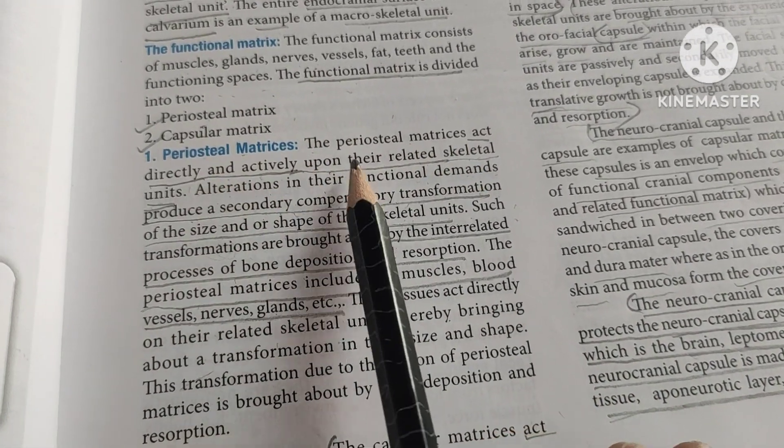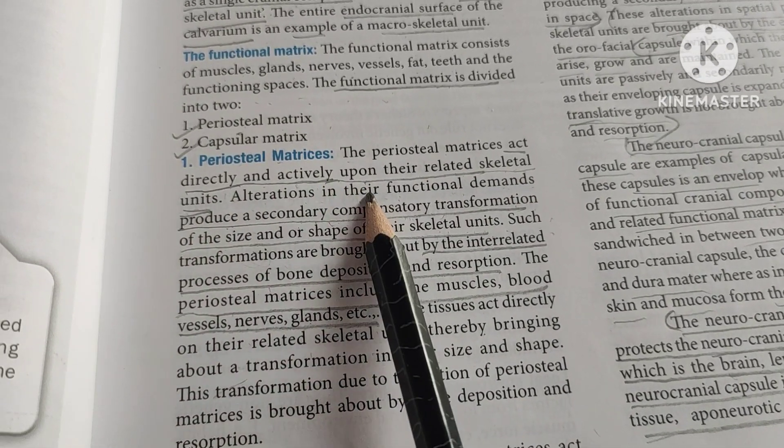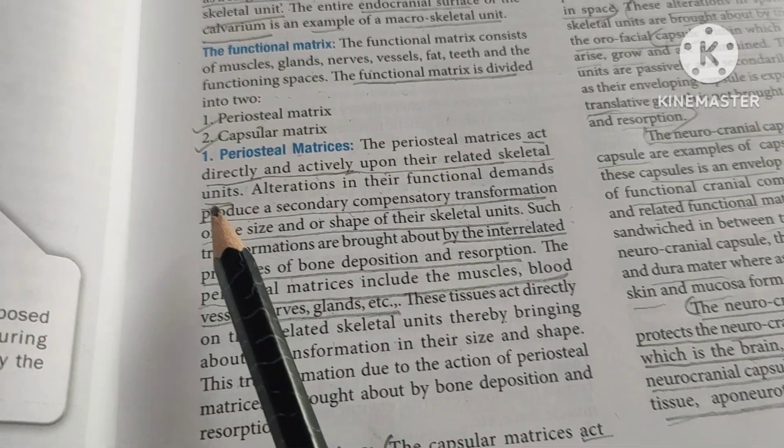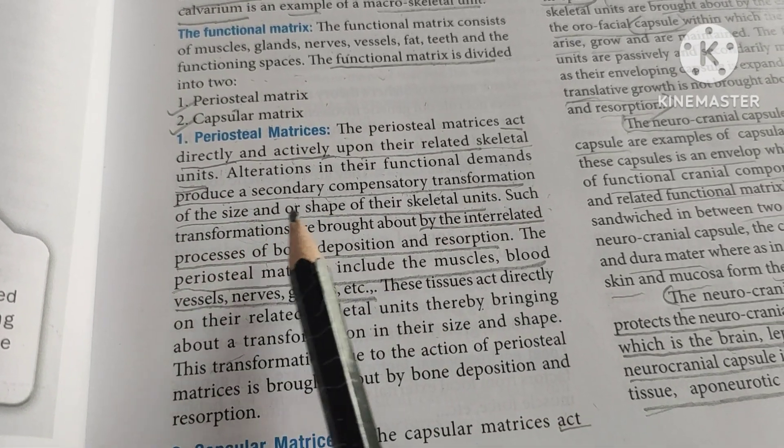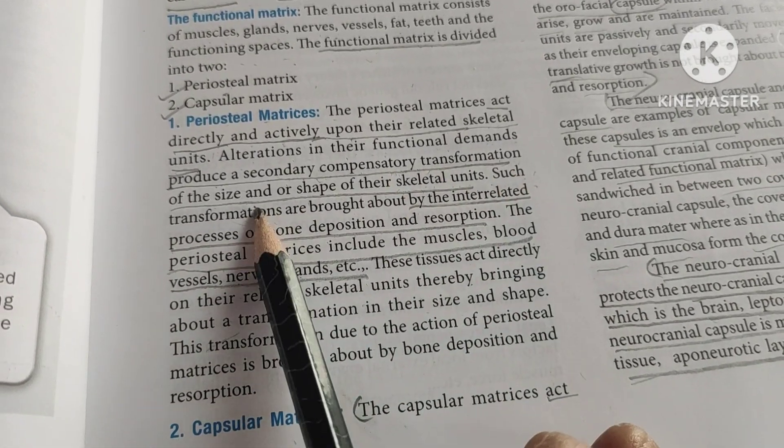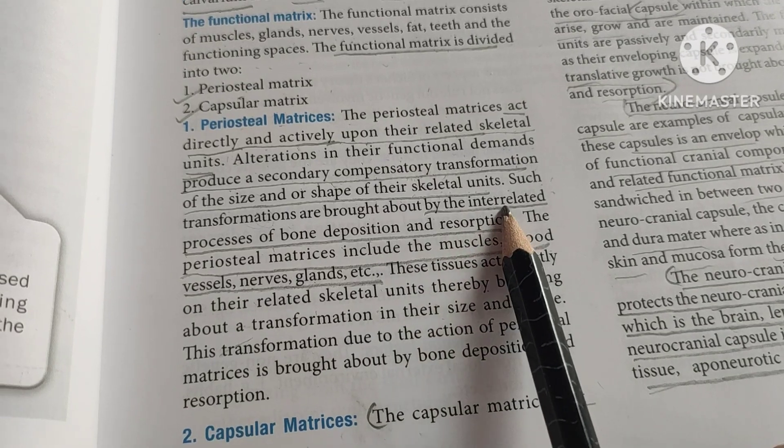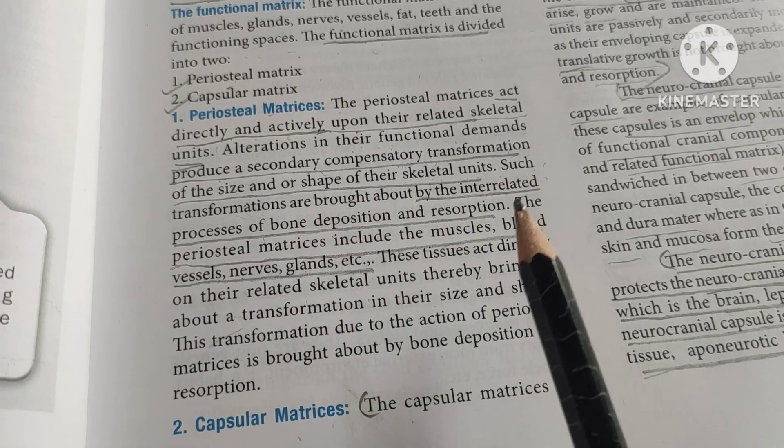The periosteal matrix acts directly and actively upon their related skeletal units. It produces a secondary compensatory transformation of the size and shape of the skeletal units. Such transformations are brought about by the interrelated processes of bone deposition and resorption.